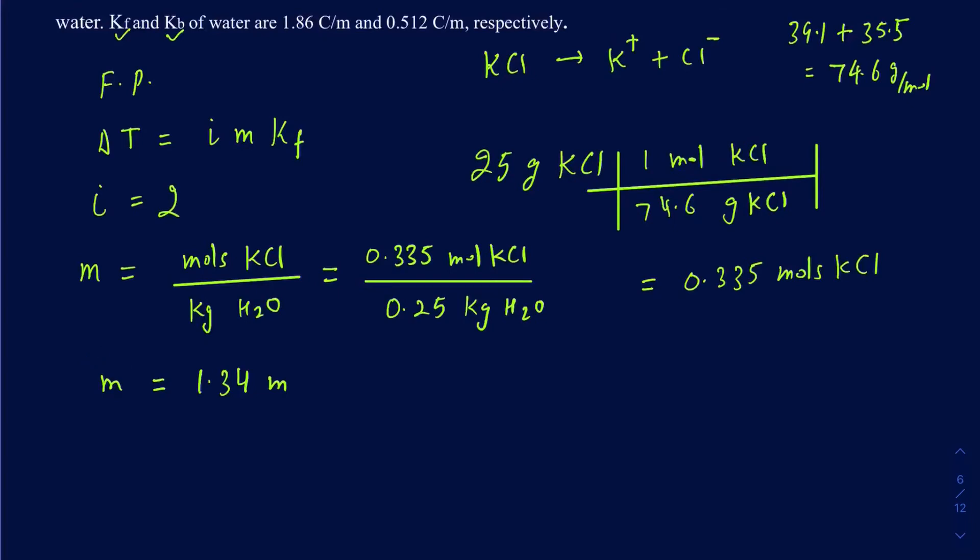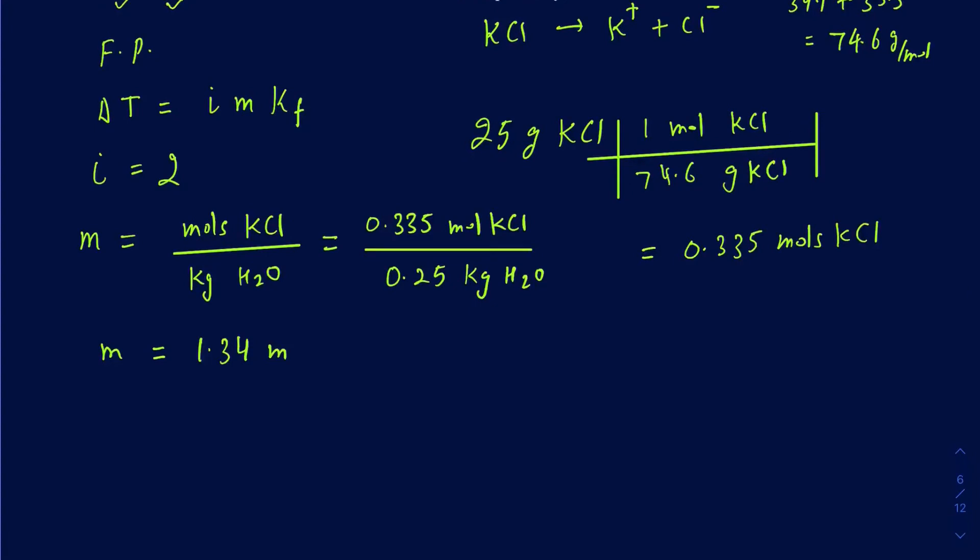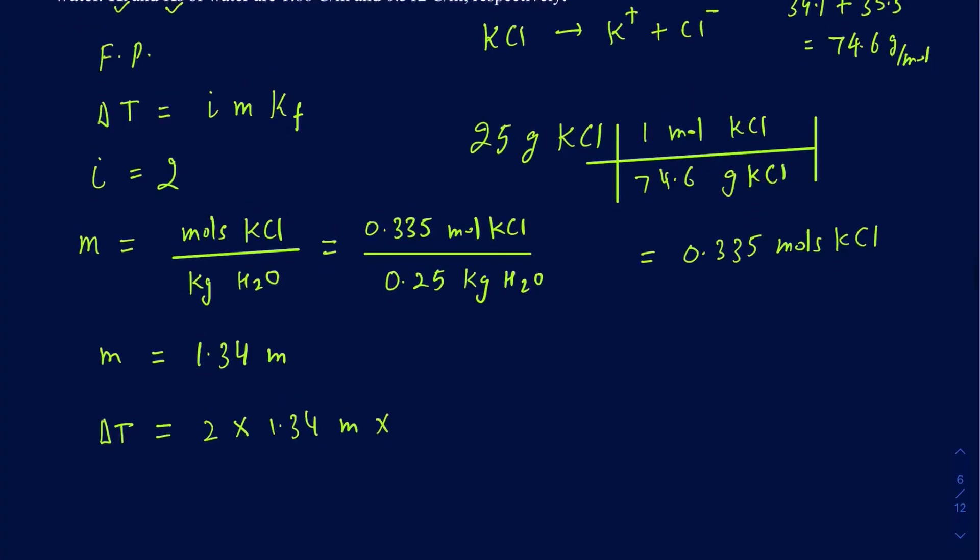So your molality at the end of the day is going to be 1.34 molar. Okay, so then we can go back and use that molality to calculate the delta T now. So delta T is going to be i is 2, molality is going to be 1.34 molar, and then your KF is going to be 1.86 degrees Celsius over the molality. So here you can clearly see that molality cancels out,